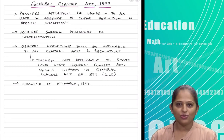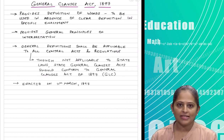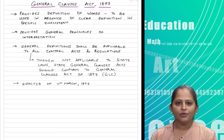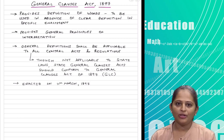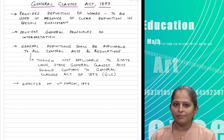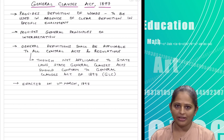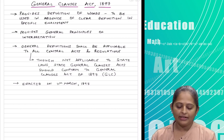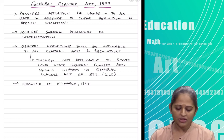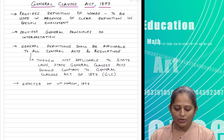Hello everyone, this is Khushbu and today I will be dealing with the General Clauses Act. To give you a brief, this act has been asked in the intermediate exam for around 10 marks. The act itself is quite small, pretty simple to understand, and the questions are quite repetitive honestly. If you do it well, you will be able to easily score those 10 marks.